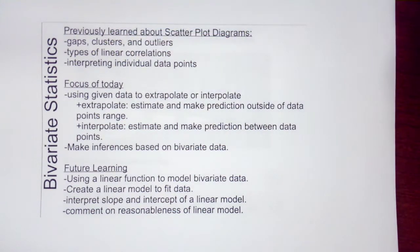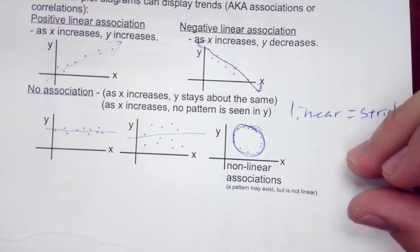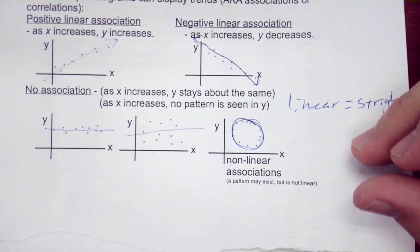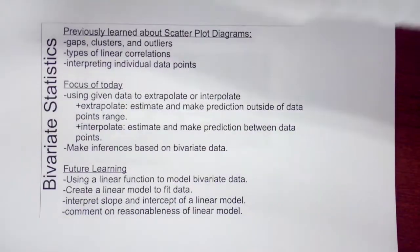We had types of linear correlations or relationships, and that was these right here: positive, negative, and then no association. Remember, linear means straight.